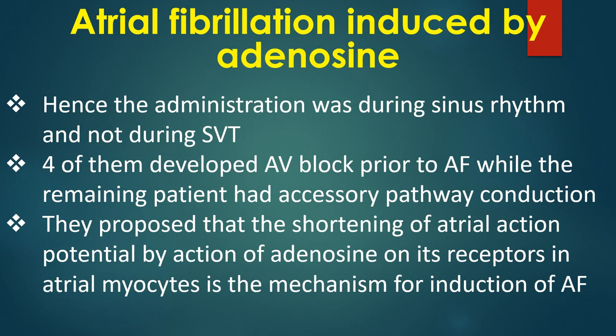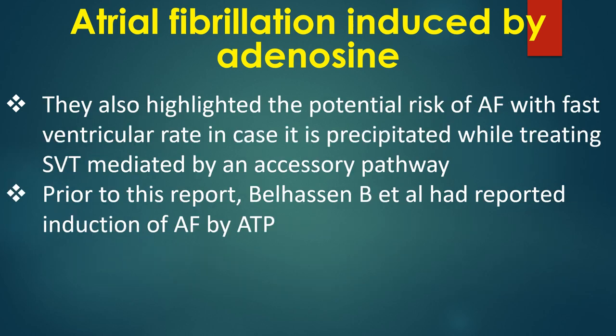Four of the five patients developed AV block prior to AF, while the remaining patient had accessory pathway conduction. The proposed mechanism was shortening of the atrial action potential by the action of adenosine on its receptors in atrial myocytes. They also highlighted the potential risk of AF with fast ventricular rate if precipitated while treating SVT mediated by an accessory pathway. Prior to this report, Belhassen and associates had reported induction of AF by ATP.